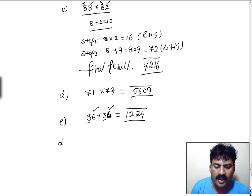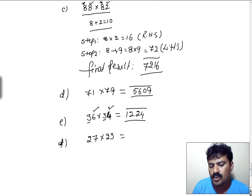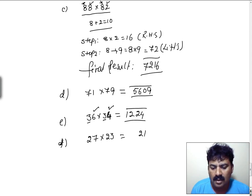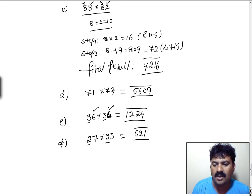One more example: 27 into 23. Here also 7 plus 3 is 10, and 2 is the digit in the tens place. 7 into 3 is 21, which is the rightmost answer. And for the 2, the next digit in the number system is 3. 2 into 3 is 6. So 621 is the final answer.